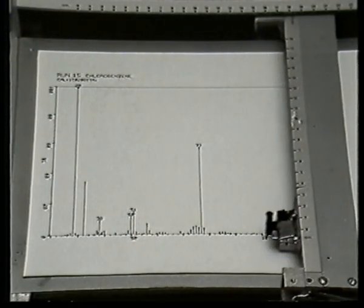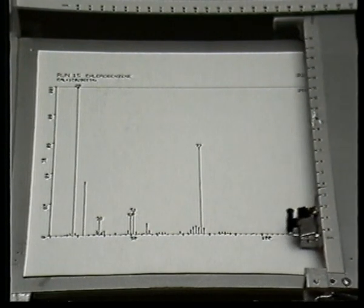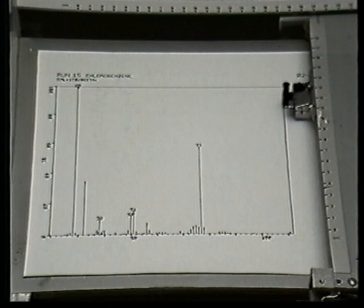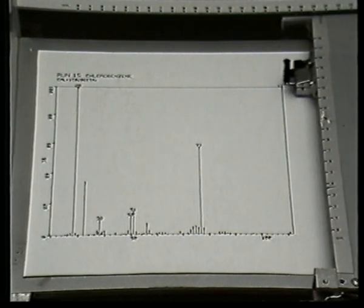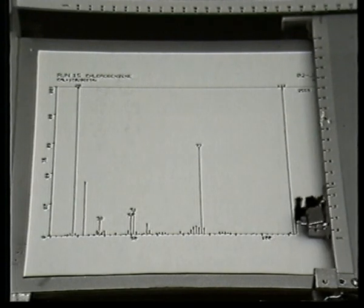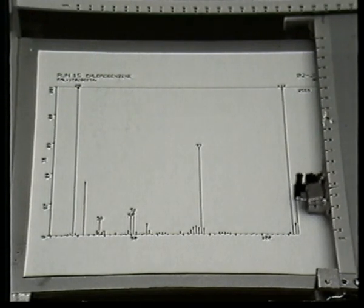Alternatively, instead of displaying on a screen, we can plot it out with a plotter like this. The two right-hand peaks here are due to the two isotopes of chlorine, which are two atomic masses apart, 35 and 37.